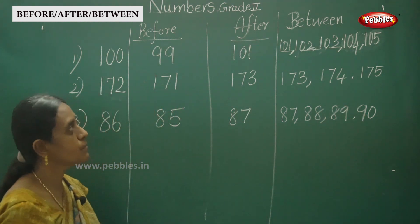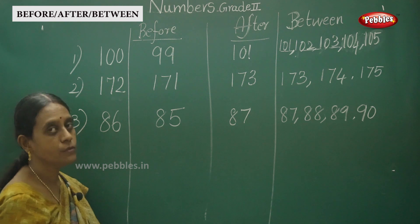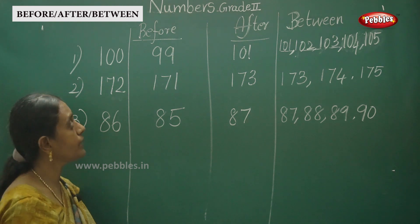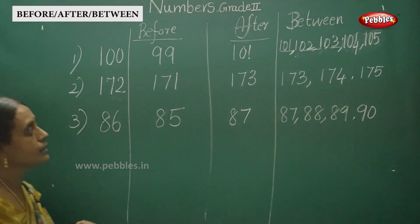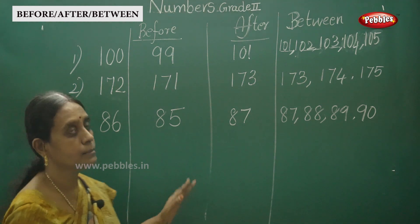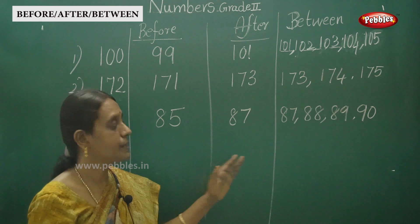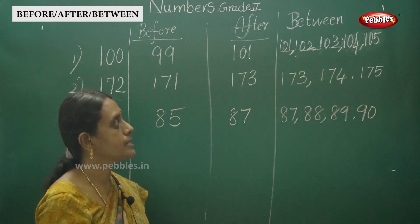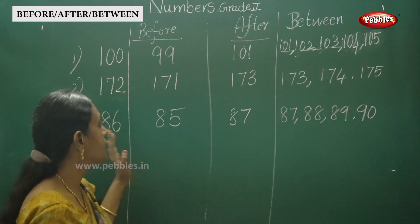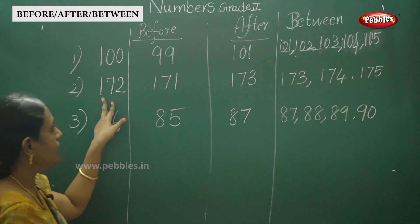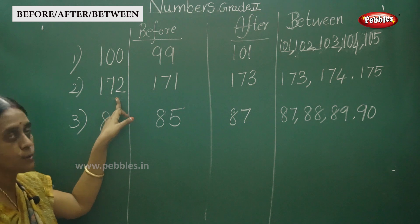So this is the way to write before number, after number, and between numbers — that is numbers counting. For a three-digit number like 172, the same logic applies.